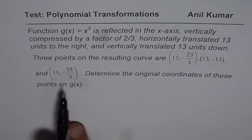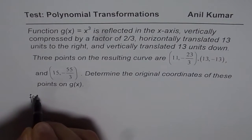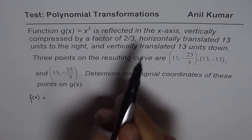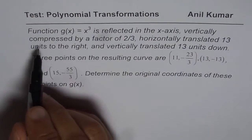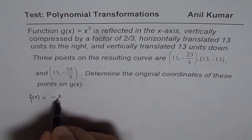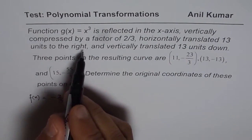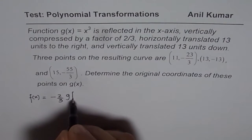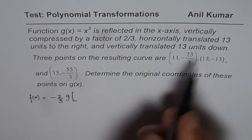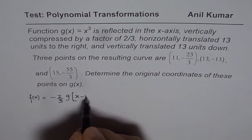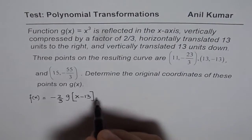What we will do here is write down the transformed function. Let us say the transformed function is f(x). Going through the transformations: reflected in the x-axis gives us a negative sign; vertically compressed by a factor of 2/3 gives us 2/3; horizontally translated 13 units to the right means x minus 13; and then vertically translated 13 units down gives minus 13.